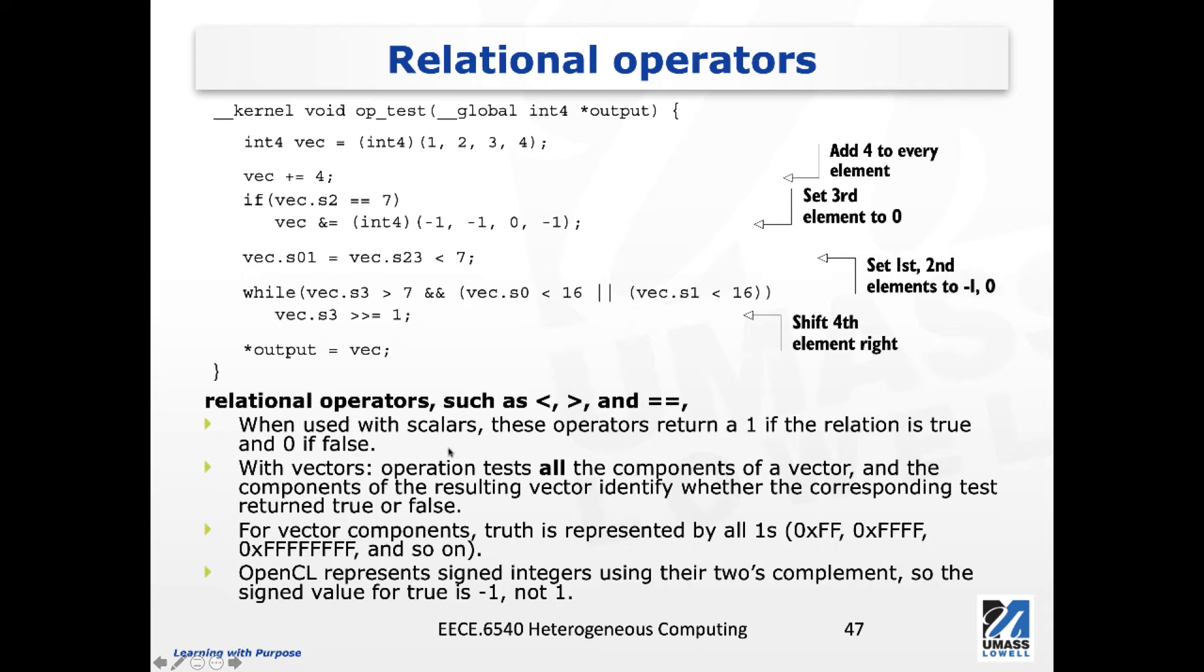These operators, when they are used with scalar values, will return 1 if the relation is true, and will be returning 0 if the relation is false.